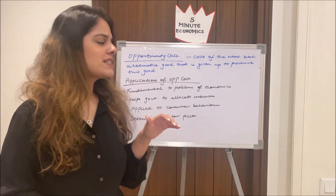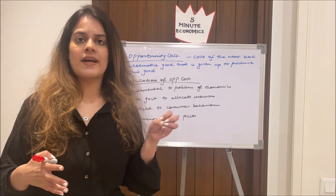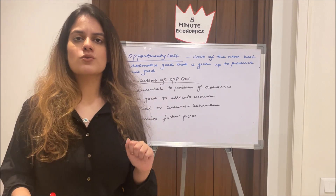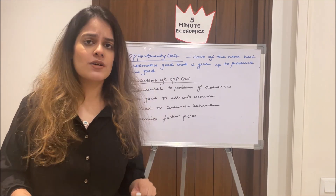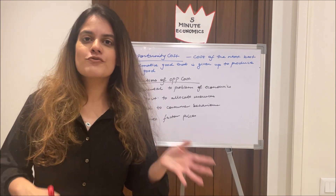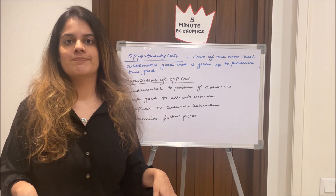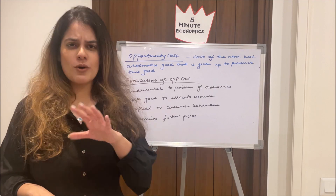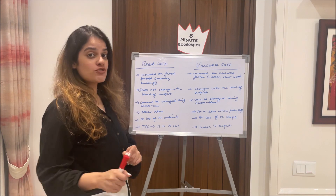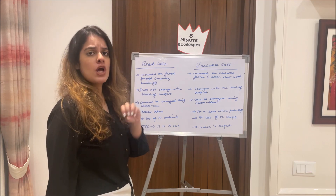Lastly, opportunity cost helps determine factor prices. For example, if I'm working at an institution earning fifty thousand a month, another institution wanting to hire me has to offer at least fifty thousand, because I'm already earning that. So opportunity cost helps decide factor prices. Moving ahead to the next two types of costs — fixed cost and variable cost — which are very important and very often used in economics.